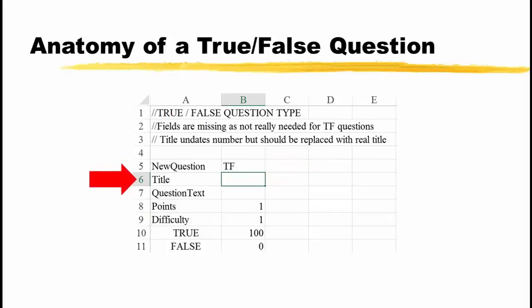Cell A6 contains the title and nothing else. Cell B6 is currently empty. This is where you would enter the title for this question. Given that D2L generally only displays the title, I would strongly encourage you to make it a descriptive title.